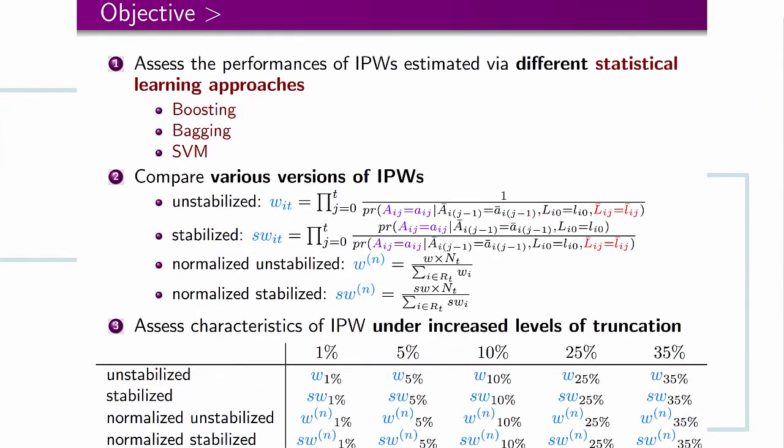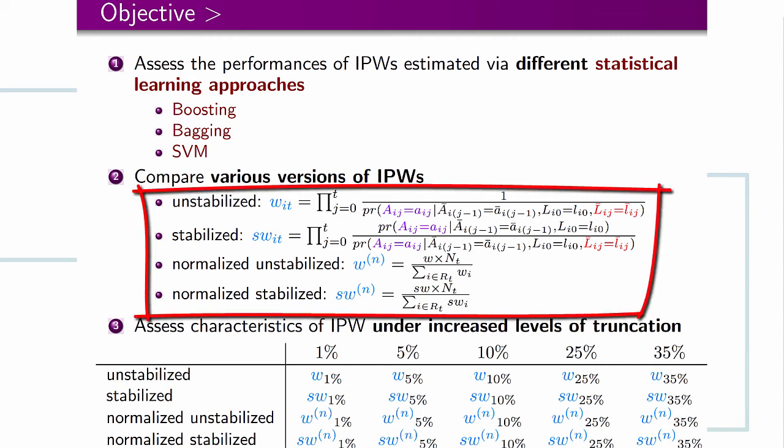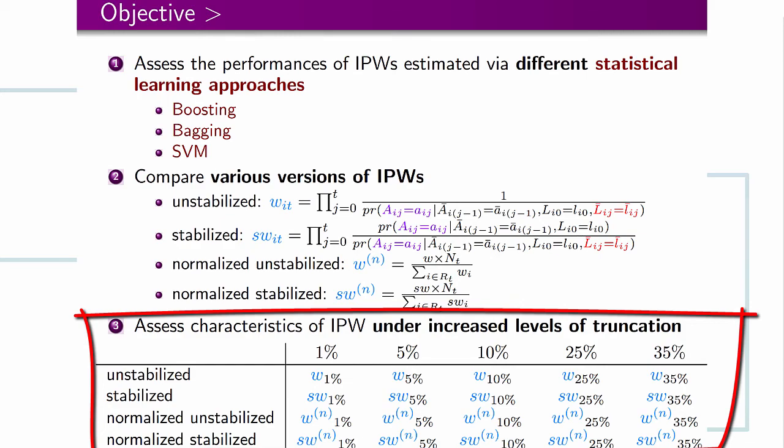Therefore, the objective of this study is to assess the performance of inverse probability weights estimated via different statistical learning approaches. As a secondary objective, we will also compare various versions of weights and corresponding truncations at various percentiles.